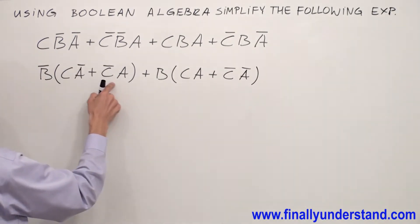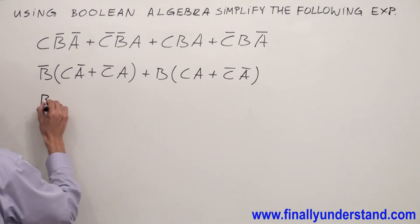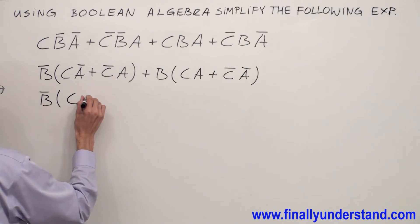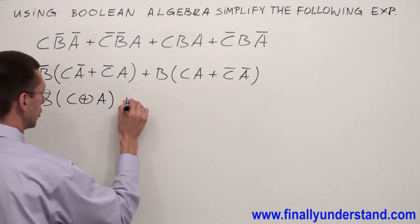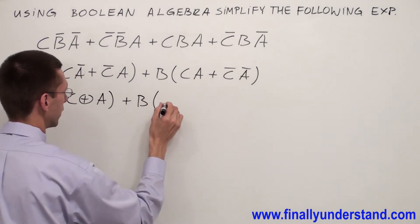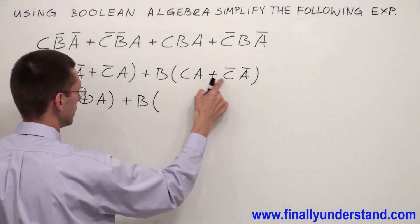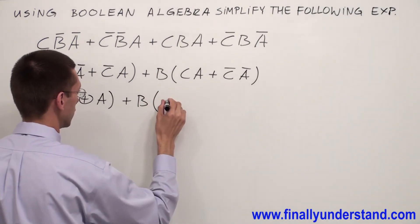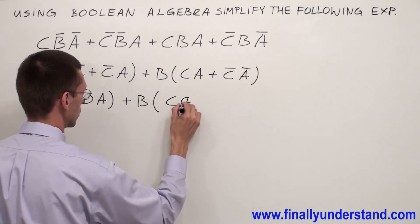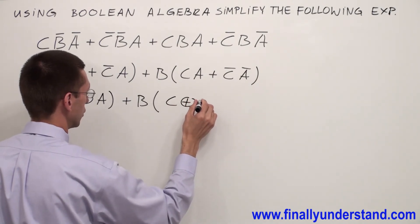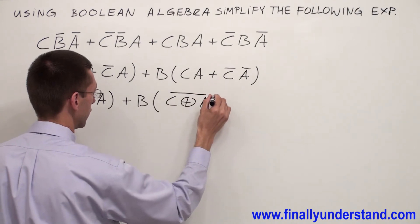As you probably recognize, this is just exclusive OR. That's why I'm going to write B̄(C XOR A), or B(C XNOR A). This is just exclusive NOR.